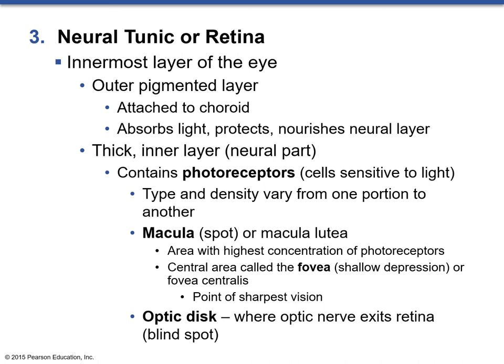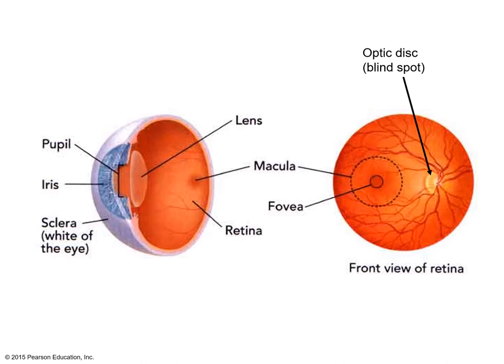Photoreceptors clustered together form what is called the macula or spot, otherwise known as the macula lutea. This is the area with the highest concentration of photoreceptors on the back part of the retina. The central area of the macula is called the fovea — a shallow depression and the point of sharpest vision with the most photoreceptors. Opposite to this is the optic disc, which is actually our blind spot — it's where the optic nerve exits the retina, meaning there are no photoreceptors there. Here we can see the retina with the macula, the fovea at its center, and the optic disc where all the blood vessels of the eye also emerge.